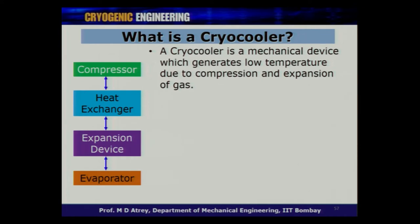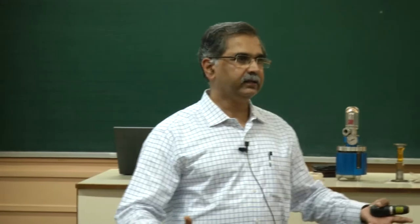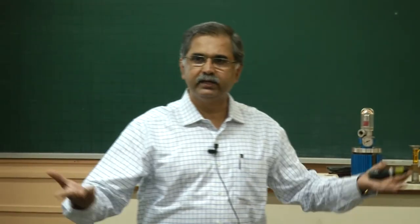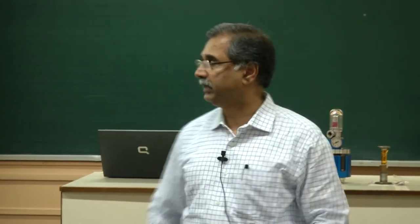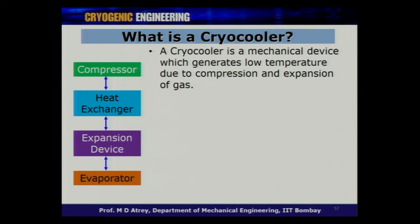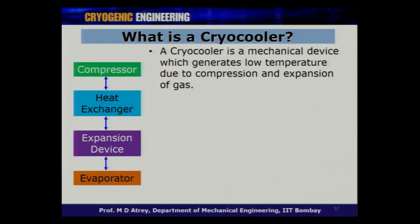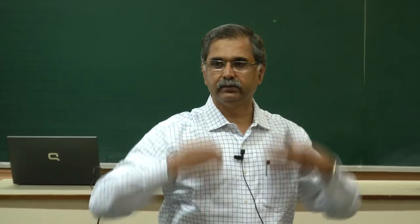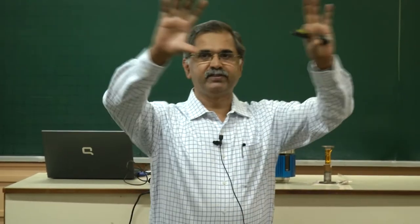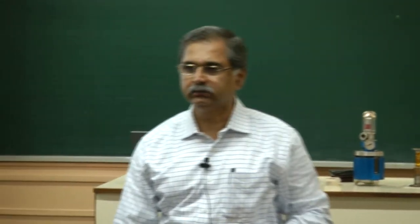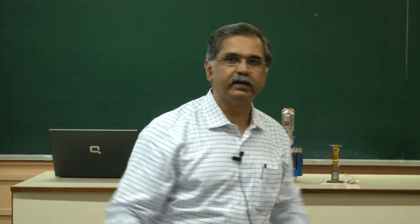Take the example of a domestic refrigerator. It has a compressor. Then there is a heat exchanger — the condenser at the back of the fridge, where the heat of compression is removed. Then there is an expansion device — a capillary tube, which you can see inside the freezer. You get lower temperature, and the evaporator is effectively the entire freezer. Air gets cooled and circulated, so the bottom is warmer and the freezer is the lowest temperature, with natural convection moving air around.